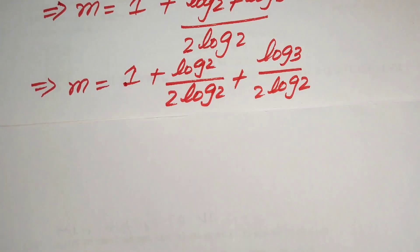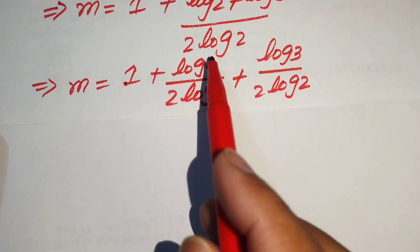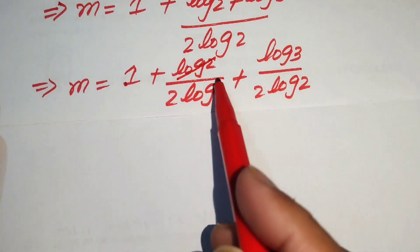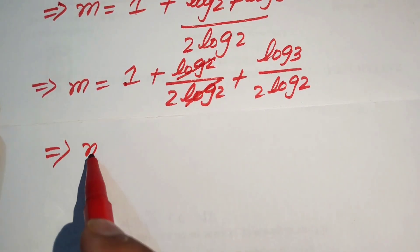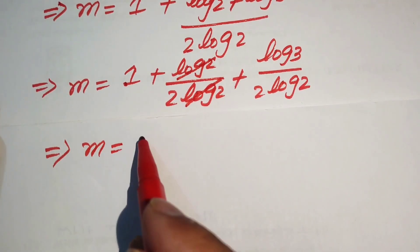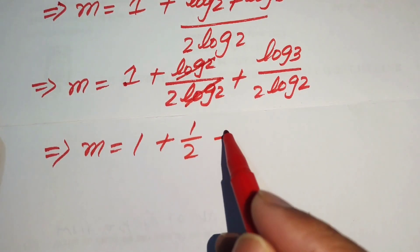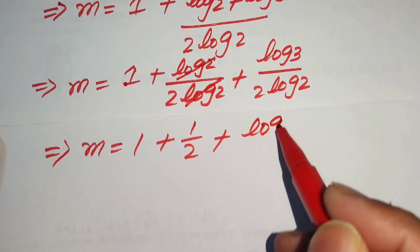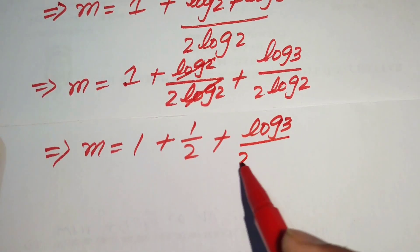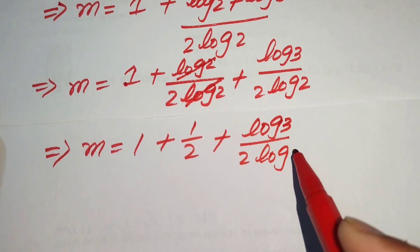In the next step, this log 2 and log 2 cancel each other, and we get m is equals to 1 plus 1 over 2, plus log of 3 divided by 2 times log 2.